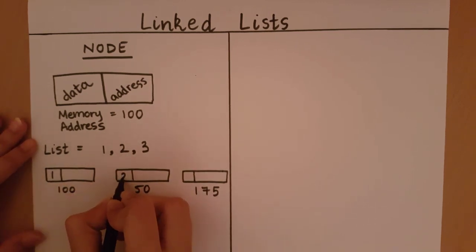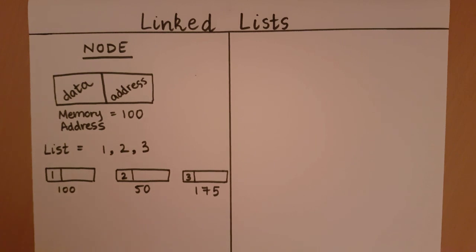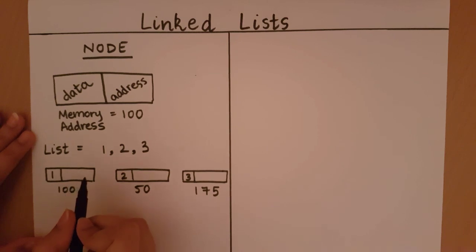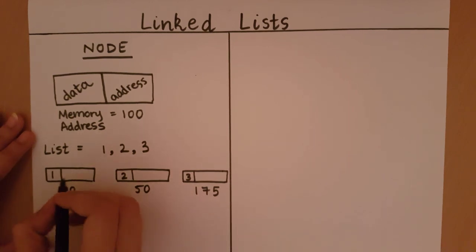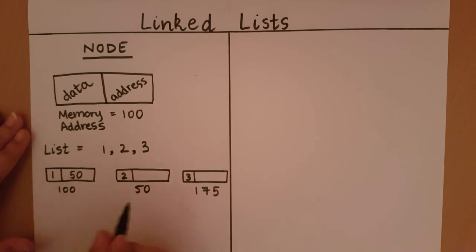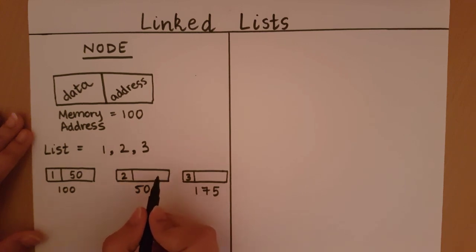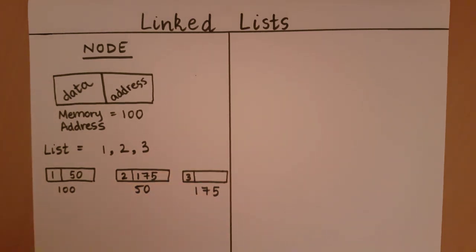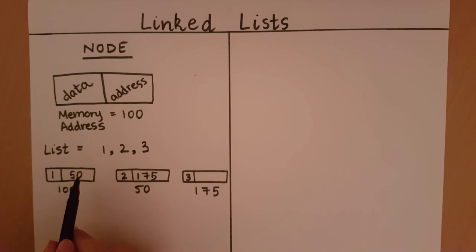The data elements we have are one, two, and three. When we want to have a list storing these elements, at each node we store the address of its successive node in the address block. So two comes after one, so we store address 50 in its address block. Three comes after two, so in the address block of the node storing two we store the address of three. When we come to the first node, we have the data and the address of the next node, and using that address we can go to the next node.